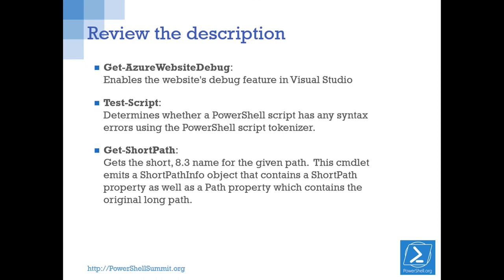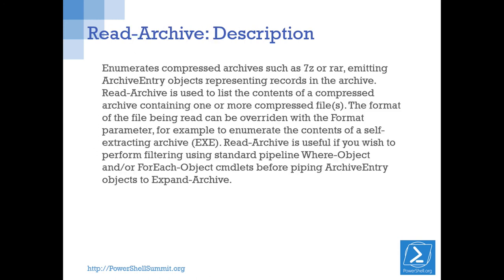Looking at some real-world description examples: the first one doesn't tell me anything — I have no idea what the context is or how to use it. Somebody was rushing. The second one is a good start: 'Determines whether a PowerShell script has syntax errors' — that gives a great deal of information. These don't have to be long. Get-ShortPath is almost there. ReadArchive is one of my favorite cmdlets — in PowerShell 5 we have Expand-Archive and Compress-Archive, but not ReadArchive's ability to peek into an archive without unzipping it.